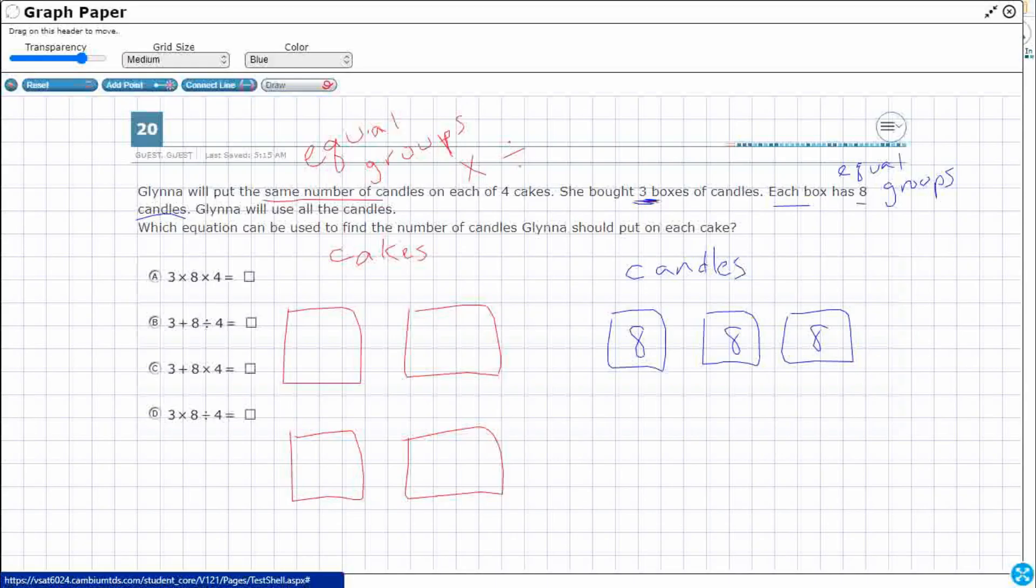And then Glenna is going to use all the candles. So we need to find the number of candles that Glenna should put on each cake. We're just going to put the same number of candles. So how many candles do I have?